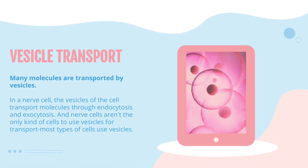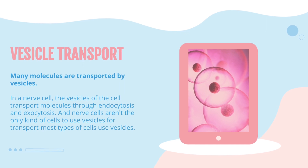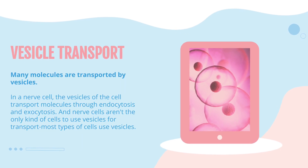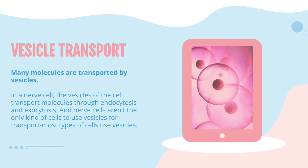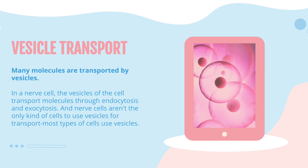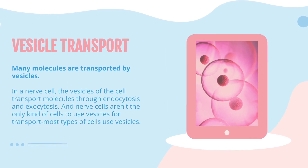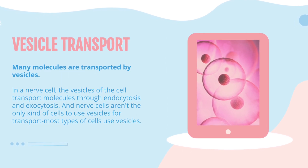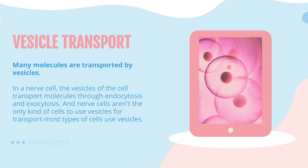Vesicle Transport: many molecules are transported by vesicles. In a nerve cell, the vesicles of the cell transport molecules through endocytosis and exocytosis. Nerve cells aren't the only kind of cells to use vesicles for transport — most types of cells use vesicles.